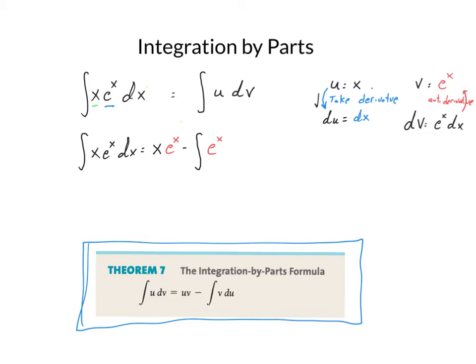So now notice that I still have an integral, but I have an integral that I know how to do, the integral or the antiderivative of e to the x dx. So I am able to do the next step. x e to the x minus the integral of e to the x dx is e to the x plus c. And that is our solution.